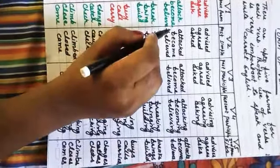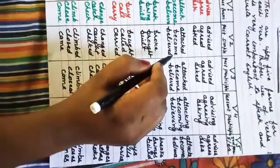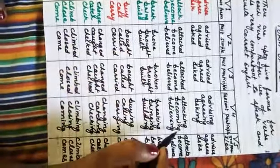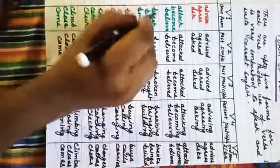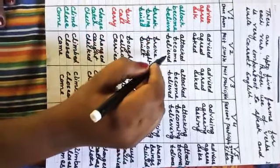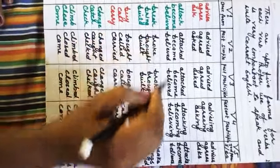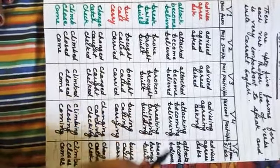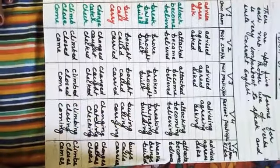Become — meaning 'hona' (to become). Second form: became. Third form: become. Fourth form: becoming. Fifth form: becomes. Believe — meaning 'biswas karna' (to believe). Second form: believed. Third form: believed. Fourth form: believing. Fifth form: believes.